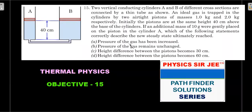Problem 1: Two vertical conducting cylinders A and B of different cross sections are connected by a thin tube. An ideal gas is trapped by two airtight pistons of masses 1 kg and 2 kg respectively. Initially both pistons are at the same height, 40 cm above the base. If an additional mass of 10 grams is gently placed on piston A, which statements correctly describe the new steady state ultimately reached? The first two options are about pressure, the last two about height difference.